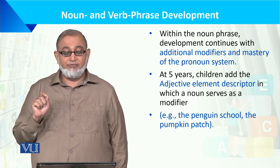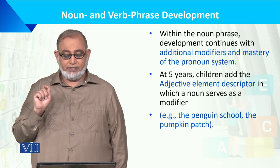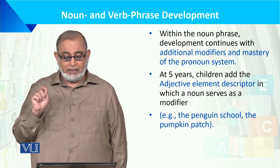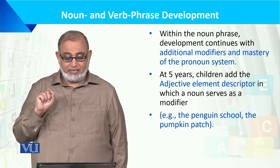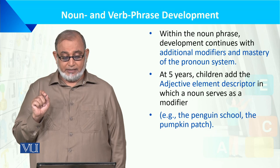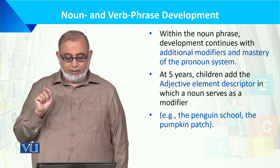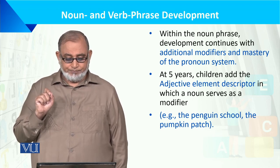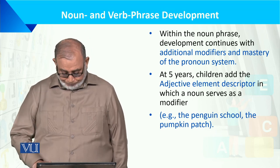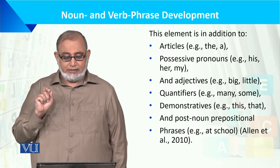Within noun phrase development, growth continues with additional modifiers and mastery of the pronoun system. At 5 years of age, children add adjective elements — descriptors in which a noun serves as a modifier. For example: 'penguin school,' 'the pumpkin patch.'